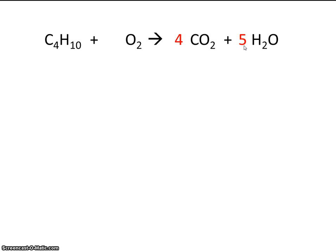Now lastly, we balance oxygen. Let's figure out how many total oxygens we have on the right. Well here we have 8, and over here we have 5. So that's 13 total oxygen on the right.